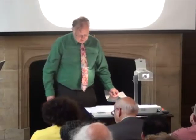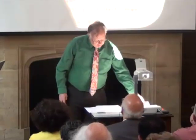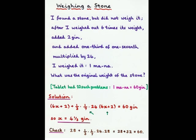As far as problem texts are concerned, here's an example of a problem from a problem text. It's this one. I found a stone, but did not weigh it. After I weighed out six times its weight, added two gin, don't misinterpret that, and added one third and one seventh multiplied by twenty-fourth, I weighed it one mana. What was the original weight of the stone? The problem is clearly not a practical one, because if you want the weight of a stone, why not just weigh it? But in fact, it's one of twenty-two problems of a very similar type, all on the same tablet, and all ending up with one mana. So this leads us to believe that the tablet was a teaching tablet.